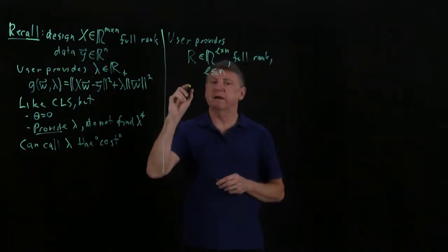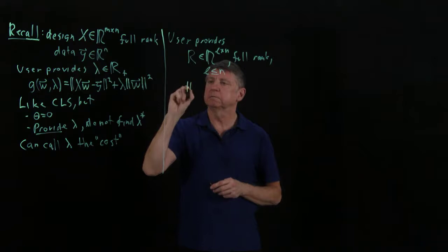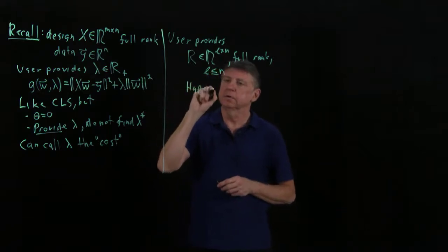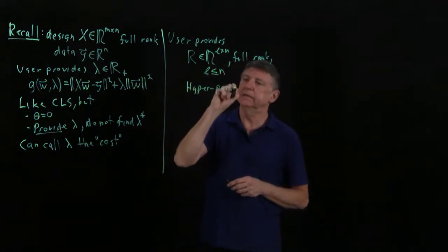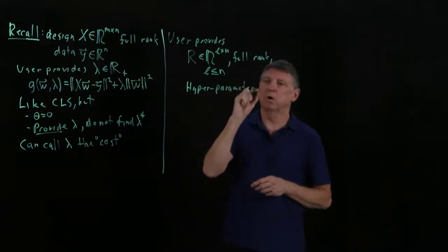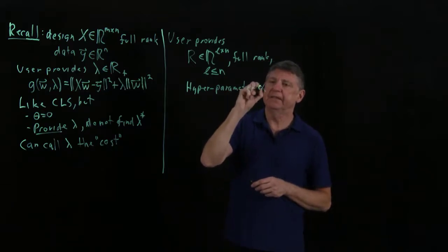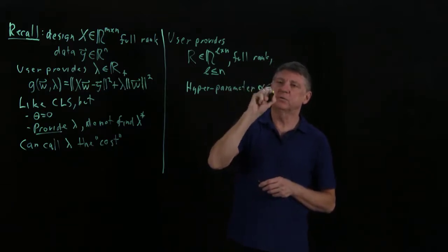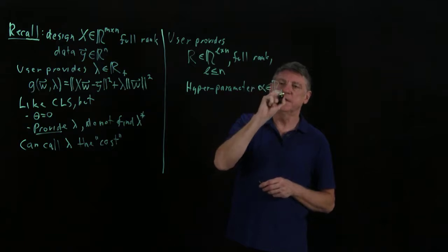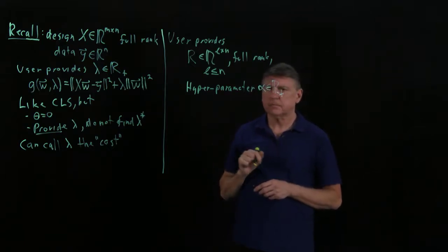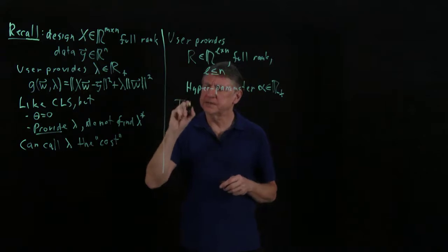The user also provides a hyperparameter alpha, which must be non-negative.